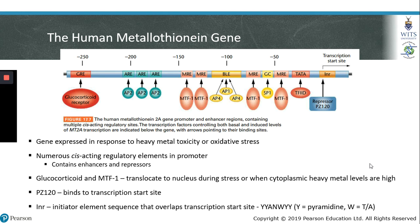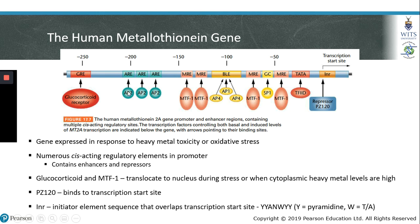To summarize these concepts, let's look at an example of the human metallothionein gene. This diagram shows the metallothionein gene and its cis-acting regulatory elements within its promoter. The metallothionein gene is expressed in response to heavy metal toxicity or oxidative stress, and it contains multiple cis-acting regulatory elements in its promoter, including enhancers and repressors of transcription. These elements — ARE, MRE, and BLE — are response elements to which transcription factors can bind in the promoter region of this gene.